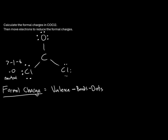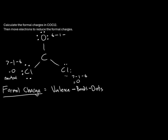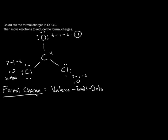Through the same math, the other chlorine also has a valence of seven, one bond, and six dots, so its formal charge is also zero. For oxygen, which is in group 6A, the valence number is six, minus one bond connected, minus six dots — six minus one minus six gives negative one, so oxygen has a negative formal charge. For carbon in group 4A, the valence is four, minus three bonds, minus zero dots — four minus three minus zero gives positive one, so carbon has a positive formal charge.